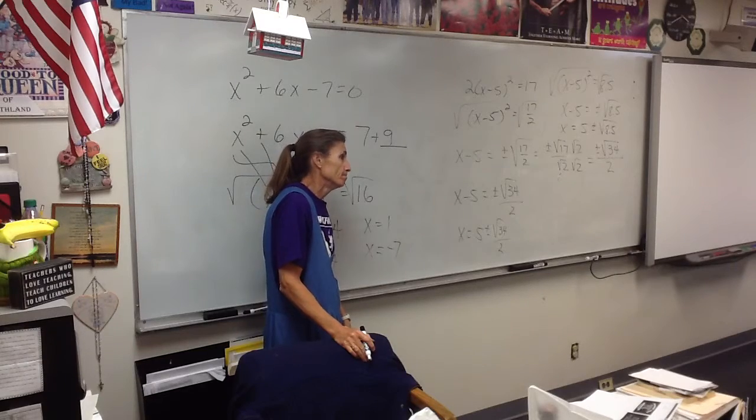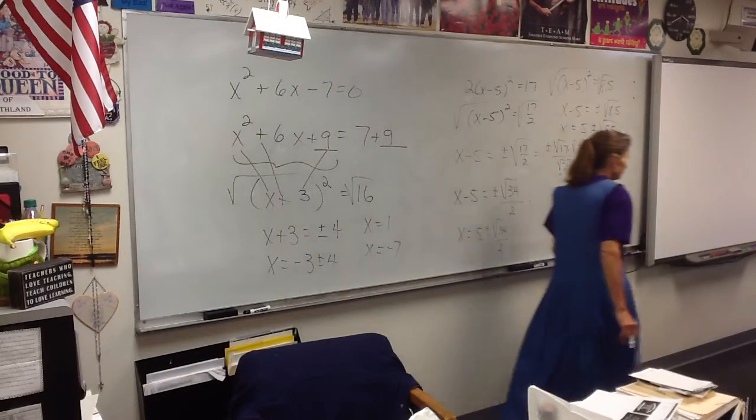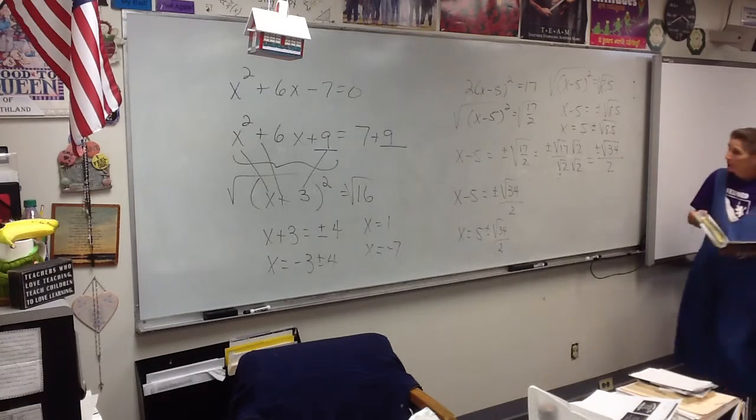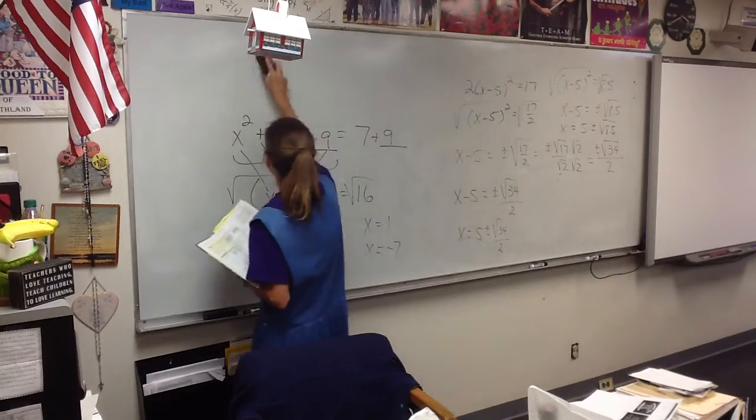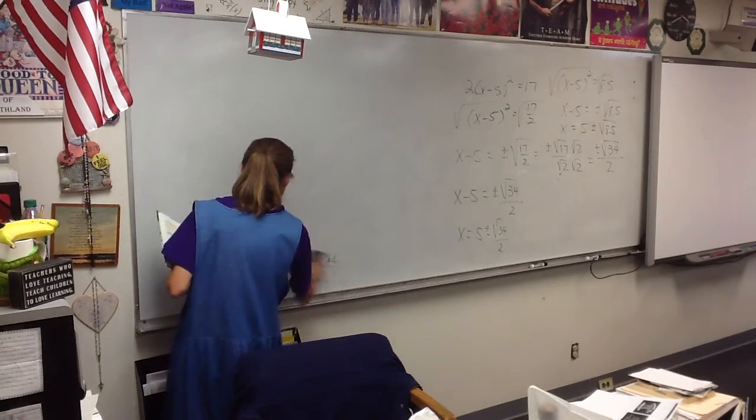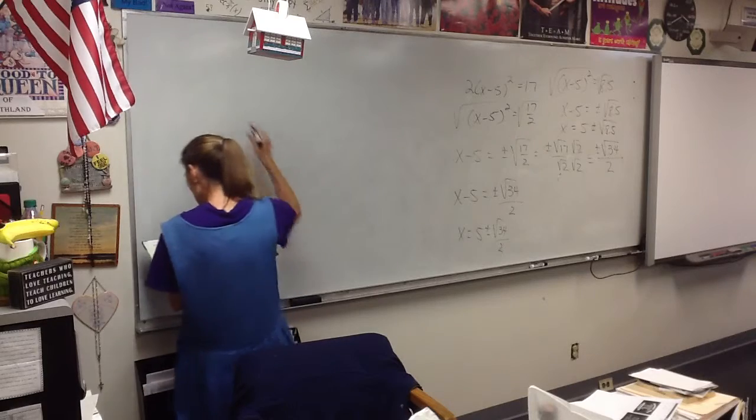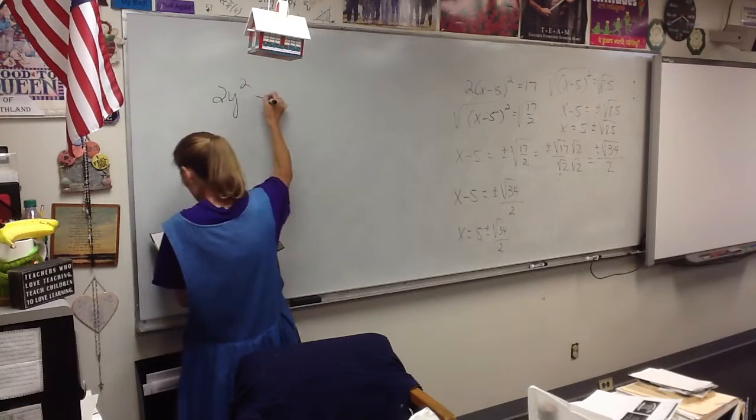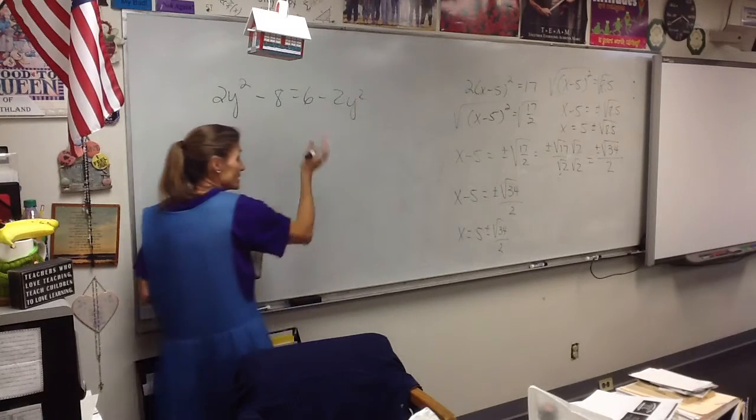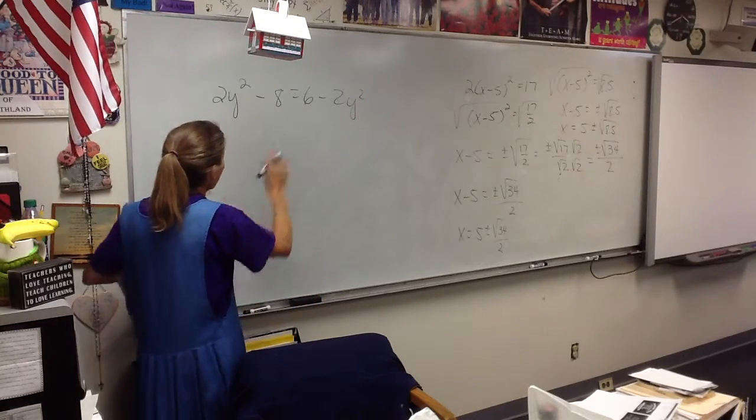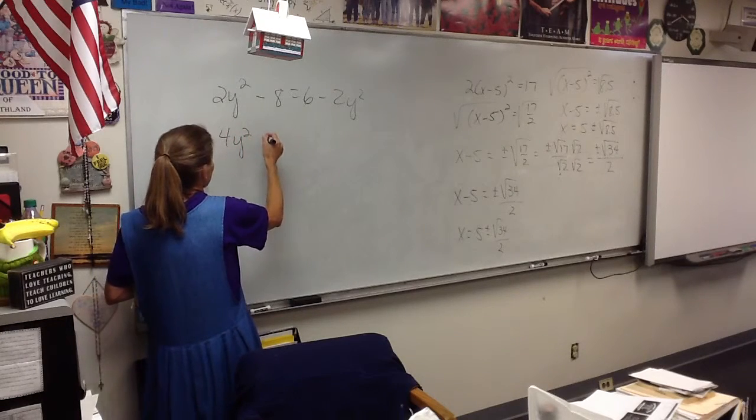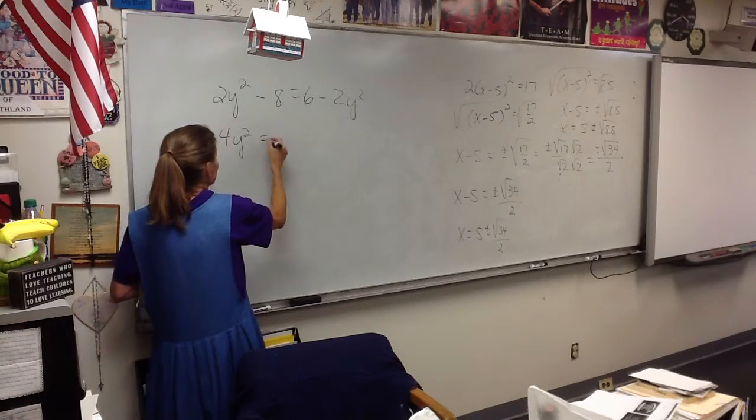11. Now 11 is not even cleaned up. So the first thing you have to do is get your equation just in shape to solve it. So Franny, do you understand what I'm talking about? You've got to get all your y's together and all your numbers together. So I'm going to add 2y squared to both sides and add 8 to both sides.